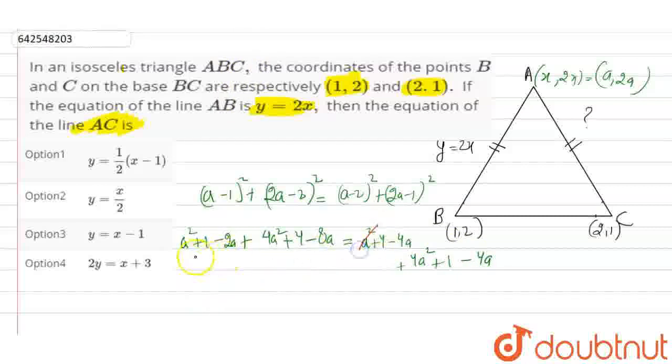Simplifying, the 4 and 4 cancel. This gives us 2A equals 0, so A equals 0.